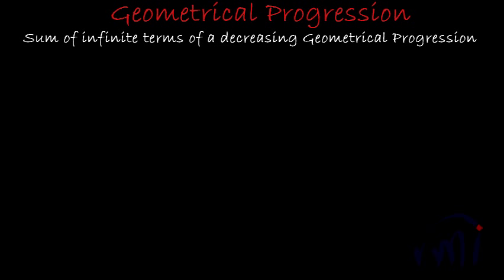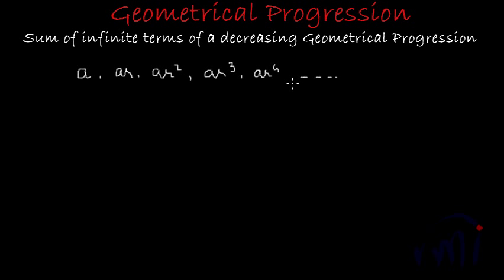We write a geometrical progression as A, AR, AR squared, AR cubed, AR to the power 4, and so on. It has infinite terms, so the last term cannot be found. In a decreasing geometrical progression, the value of r is a proper fraction.